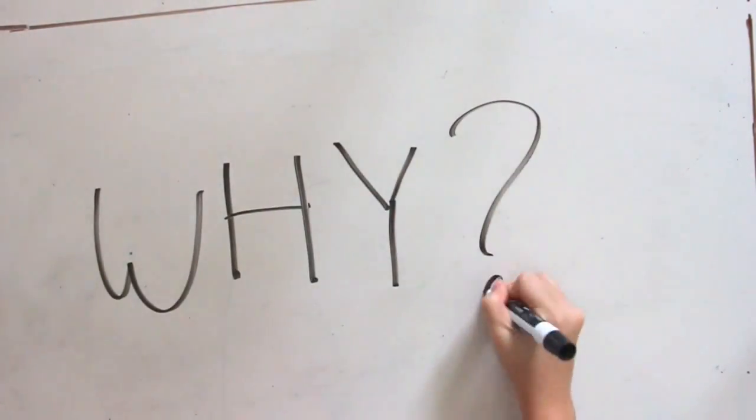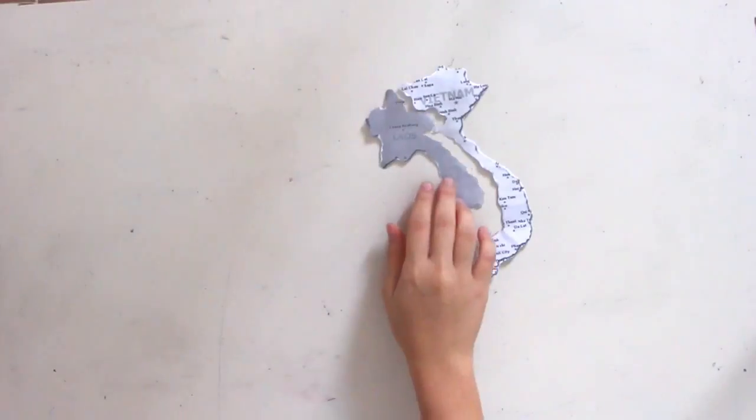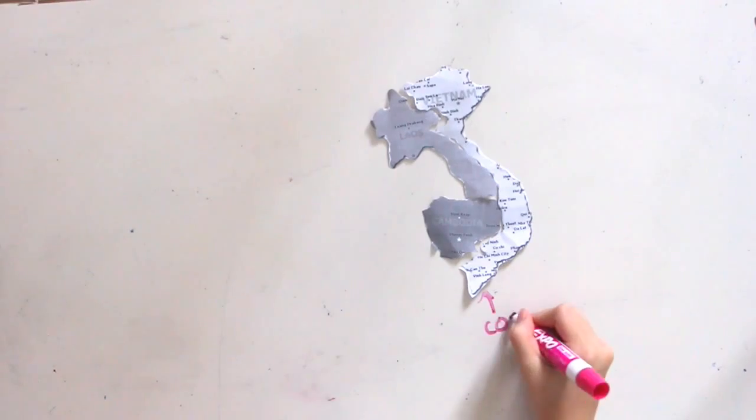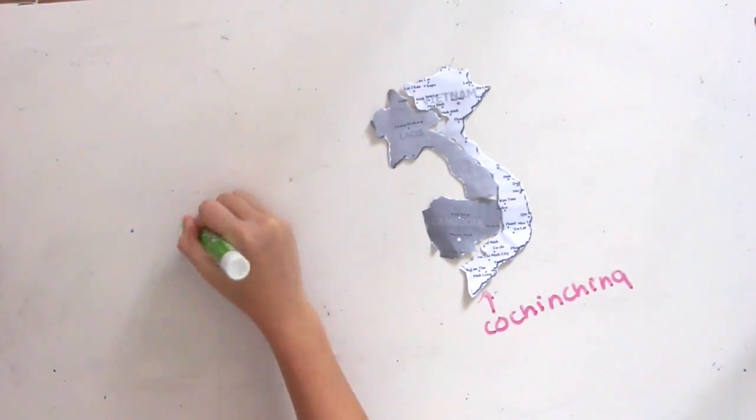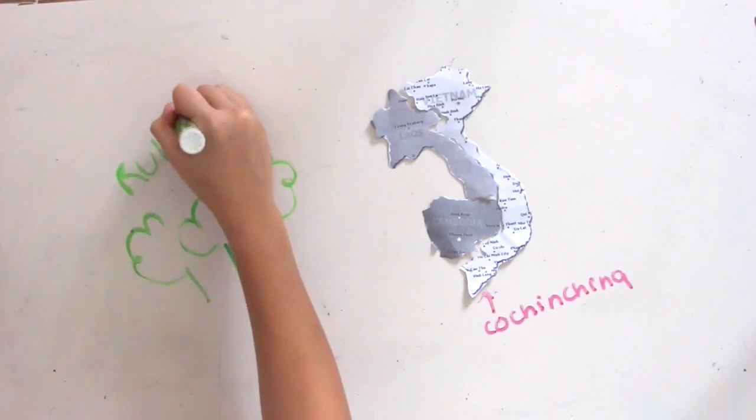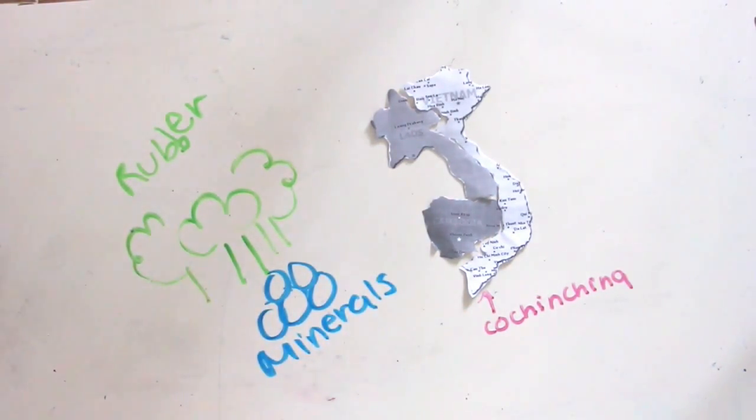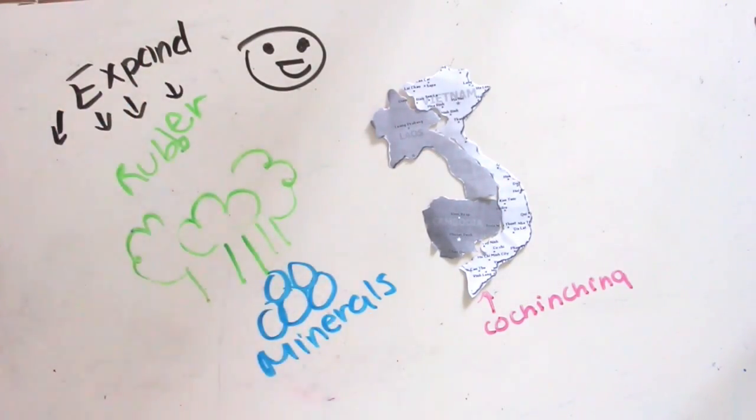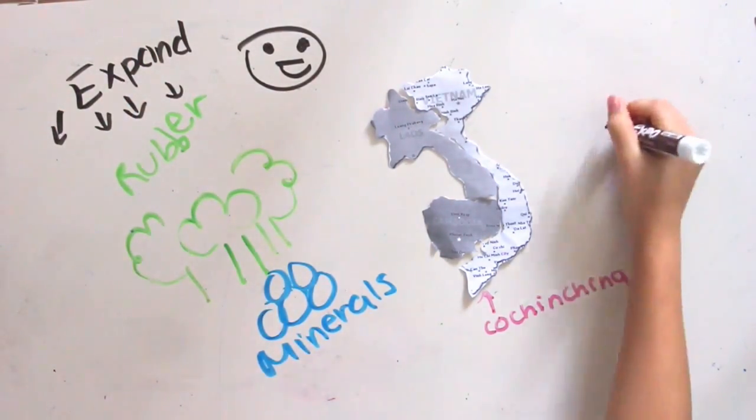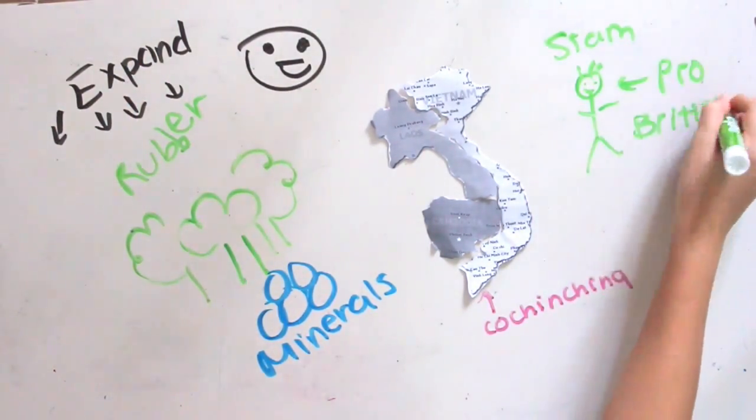So why did the French come to Cambodia? The French initially came to colonize Cochin China, which is southern Vietnam. After seeing Cambodia, which was rich in resources like rubber and minerals, and in its weakened state, they saw the opportunity to expand their Indochina colony. The Siam, who were going against them, were also pro-British, who were the French's rivals.